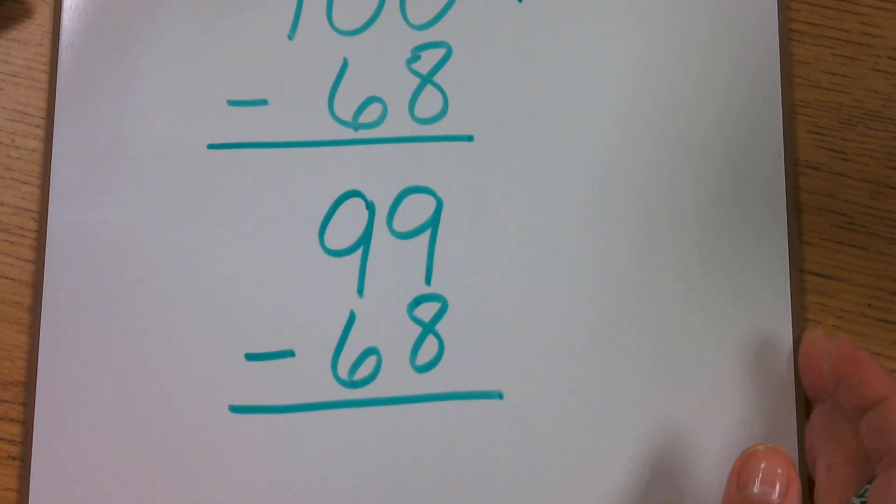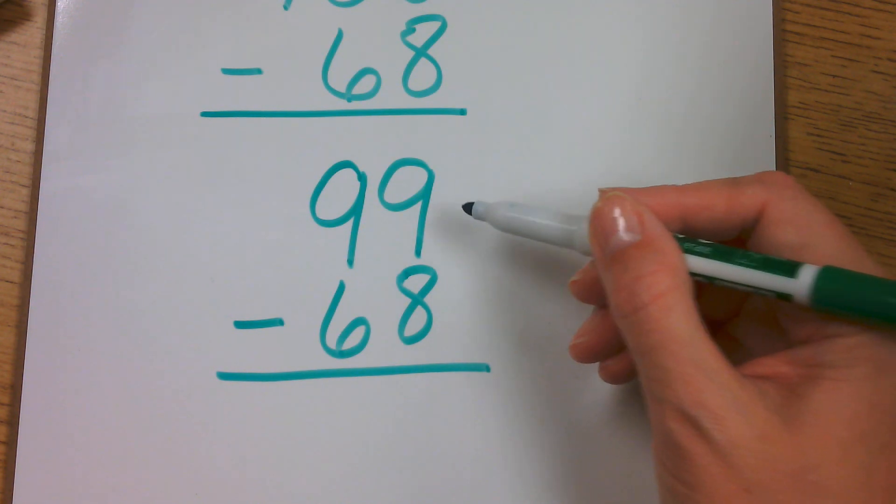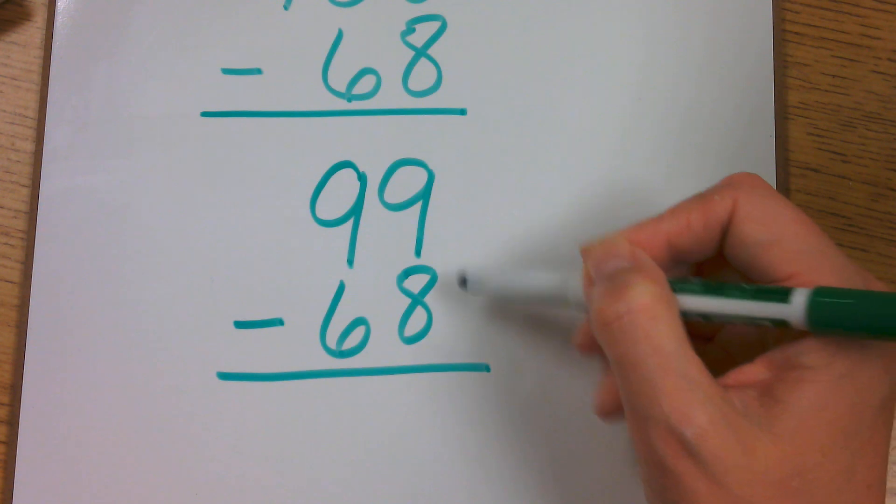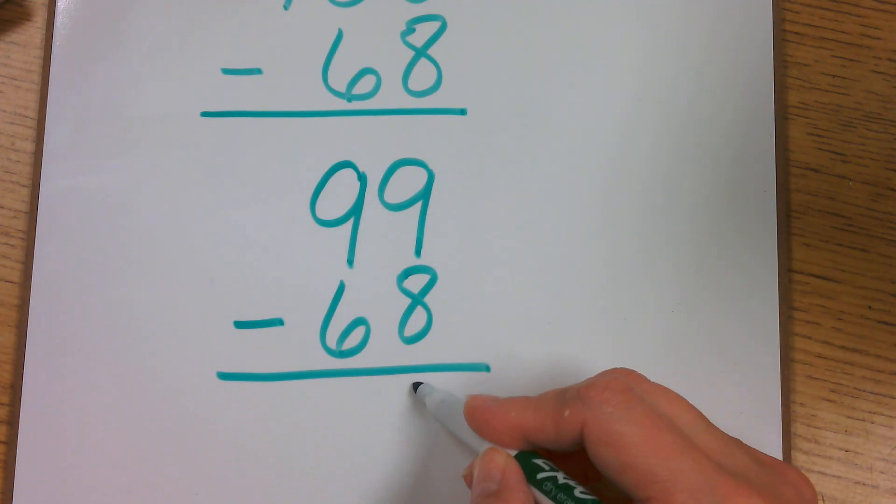Well, now I'm going to start with my ones place to subtract, and I see that there's more on top. There's no need to stop. I can go ahead and subtract. And I will subtract the ones first. 9 minus 8 equals 1.